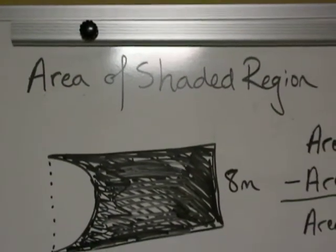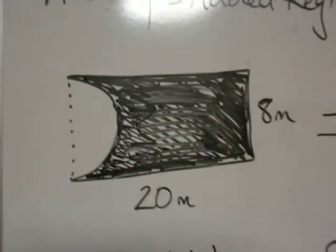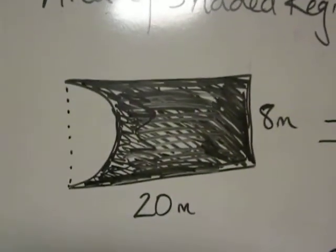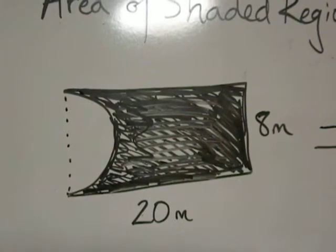Now we're going to find the area of the shaded region. When I first look at my picture, the first thing I need to do is ask myself what two shapes do I see. In this particular picture I see a rectangle and a half of a circle.